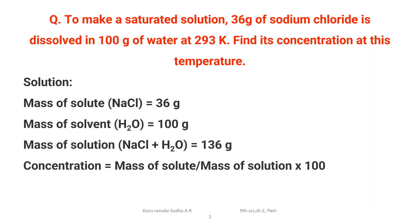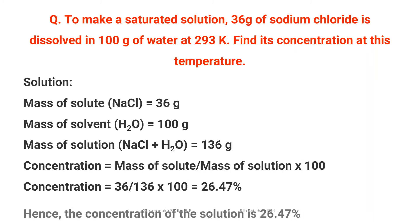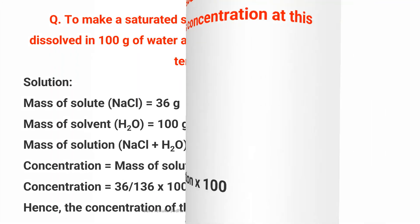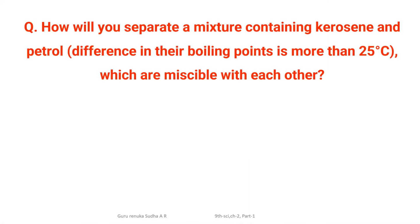Concentration is calculated using the formula: concentration equals mass of solute divided by mass of solution, multiplied by 100. Substituting the values, we get 26.47 percent as the concentration of the solution at 293 Kelvin.